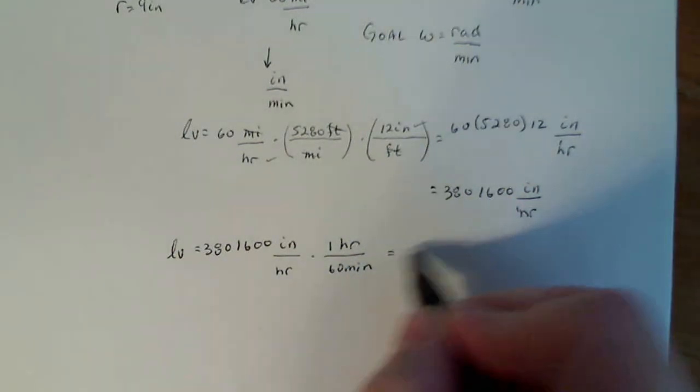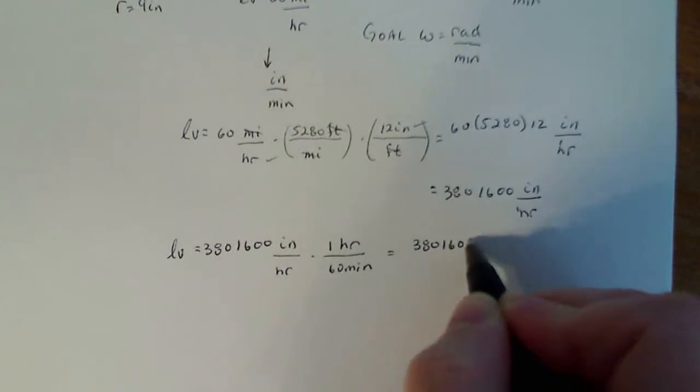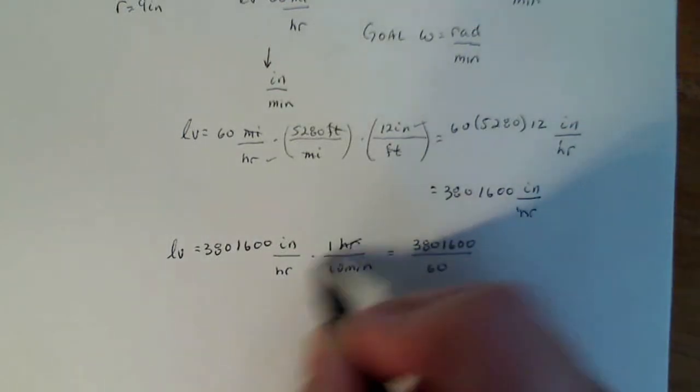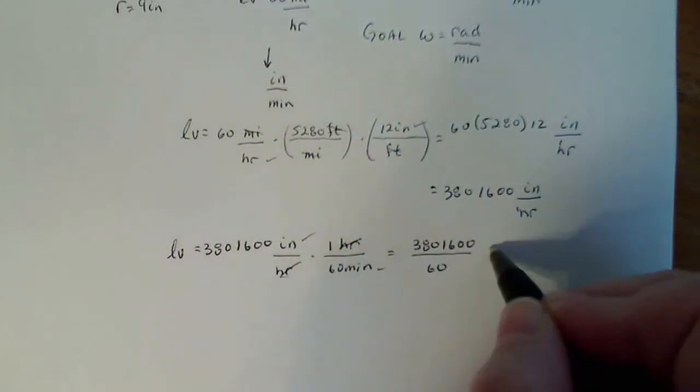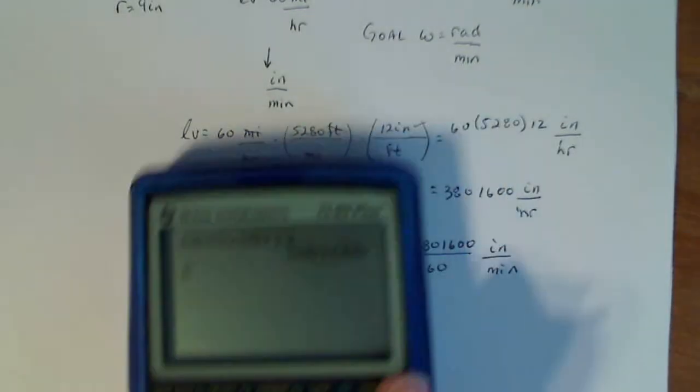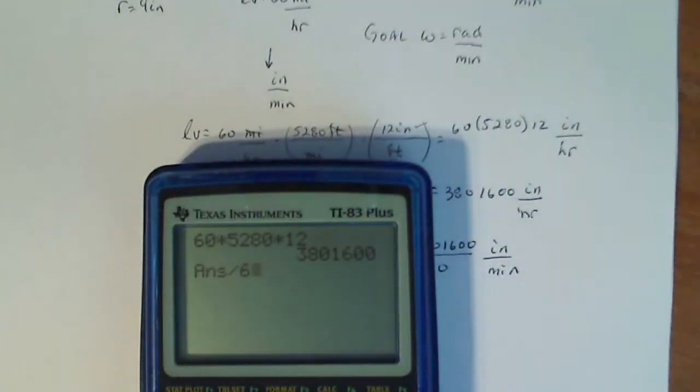So that's going to be 3,801,600 divided by 60 inches per minute, exactly what I want to work with. It's going to help me get through my problem a lot easier. So if I divide my number by 60, 63,360.